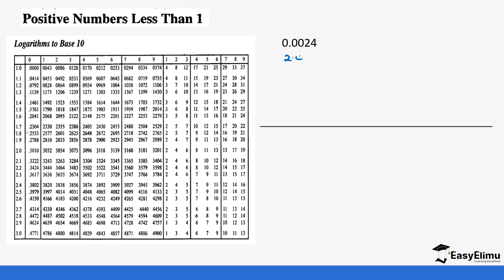So we say 2.4 times 10 to the power negative 3 is 0.3802, which gives us bar 3.3802. Remember, as we are looking for values that are less than one on the logarithm tables, we get negative values. The negative is only on the whole number. We need to remember this concept, especially when we are doing the application of logarithms.